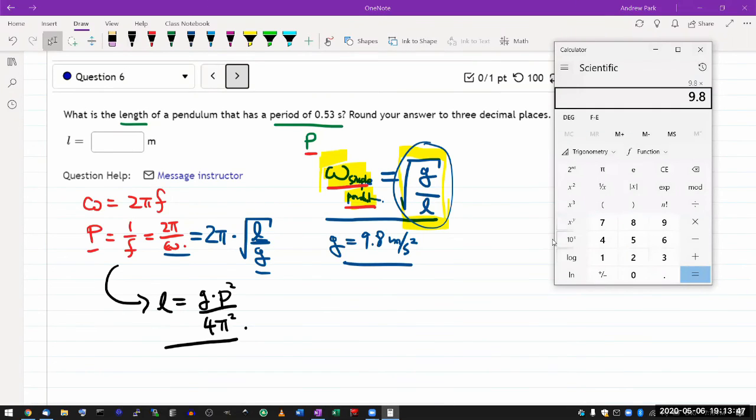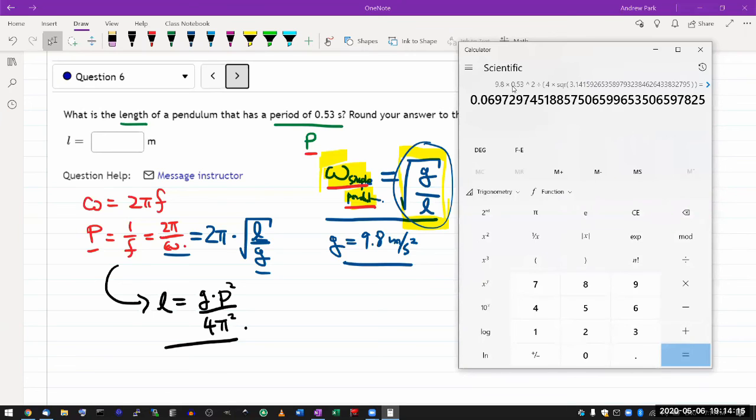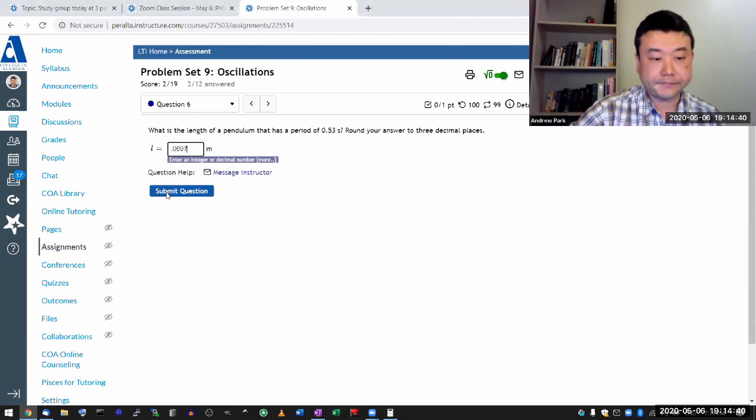Let me plug in the numbers: g is 9.8 times the period 0.53 squared divided by 4 times π squared. 9.8 times 0.53 squared divided by 4π squared. The length should be 0.0697 meters. Let me put that in: 0.0697. Yep.